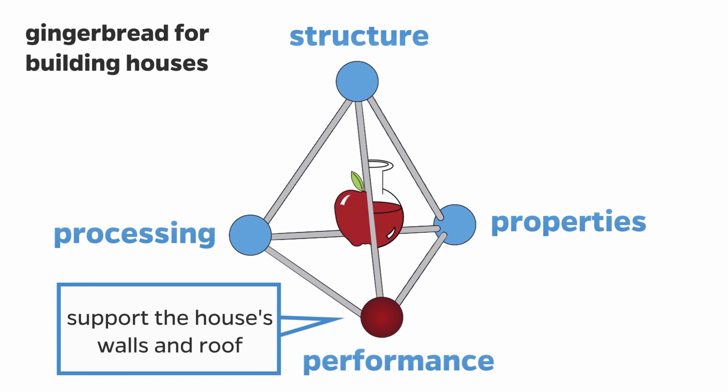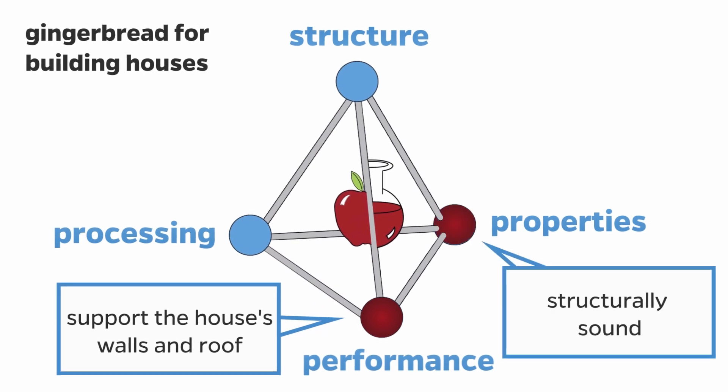Instead of being soft and fluffy, we want it to be structurally sound so they can support the house's weight. Hmm, that makes sense. But how can we modify the recipe to make more structurally sound cookies? When I was comparing recipes online, I found some that used a lot of butter and some that didn't use much butter at all. Maybe that's a factor?